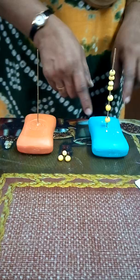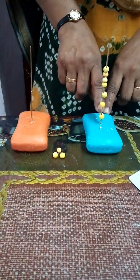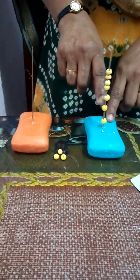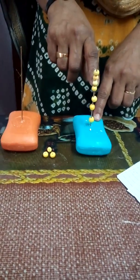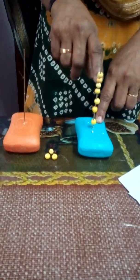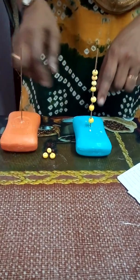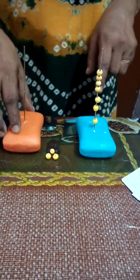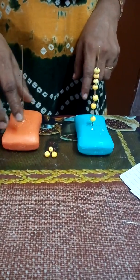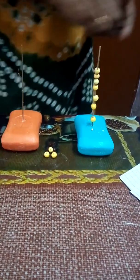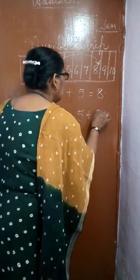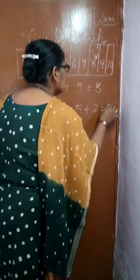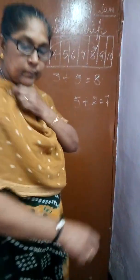Look here, children — once more we will count: 1, 2, 3, 4, 5, 6, 7. So, 5 plus 2 is equal to 7.